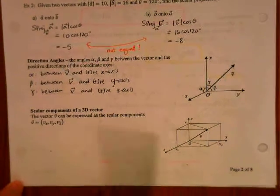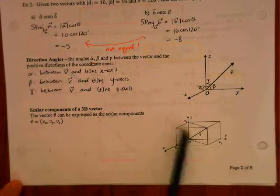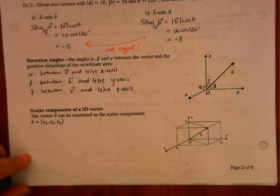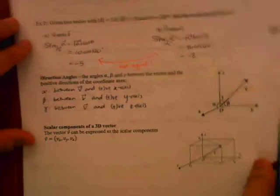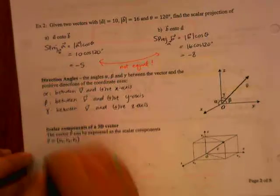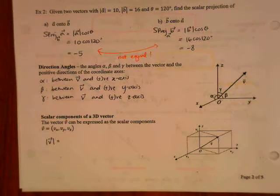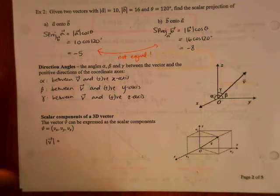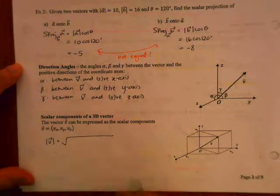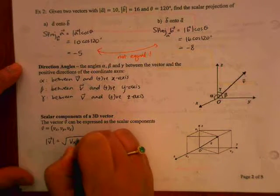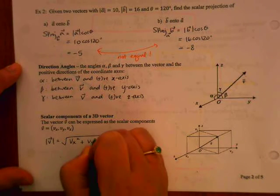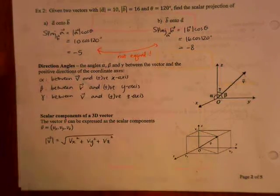Okay, and then you know that the vector V can be expressed as the scalar components, Vx, Vy, Vz. So think of this as review then. What's the magnitude of vector V using the components? Triple Pythagorean theorem, so square root of Vx squared plus Vy squared plus Vz squared.